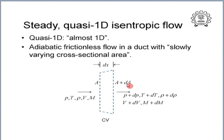Since dA is infinitesimally small, we can assume that as the flow proceeds from one axial location to the next, the lateral component of velocity is going to be very very small. The flow is predominantly characterized by a velocity component in the axial direction. So we have a control volume whose left face has an area A and the right face has an area A plus dA.